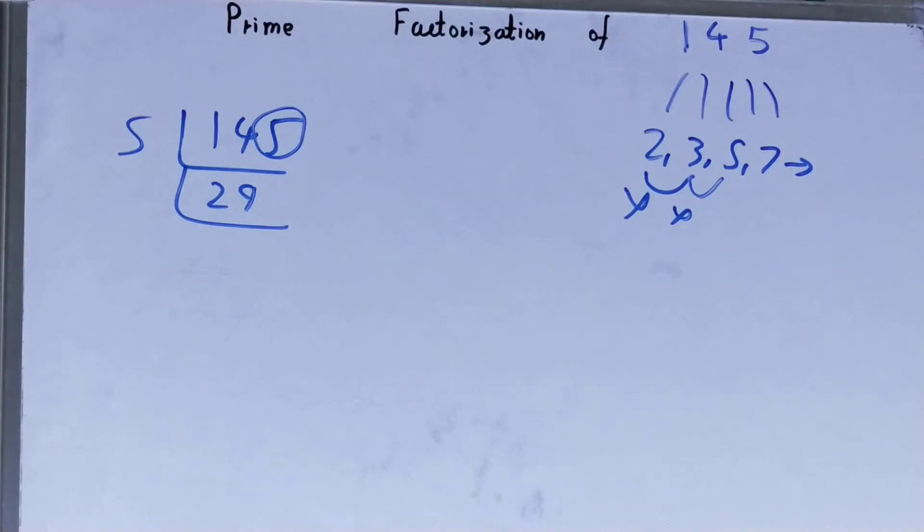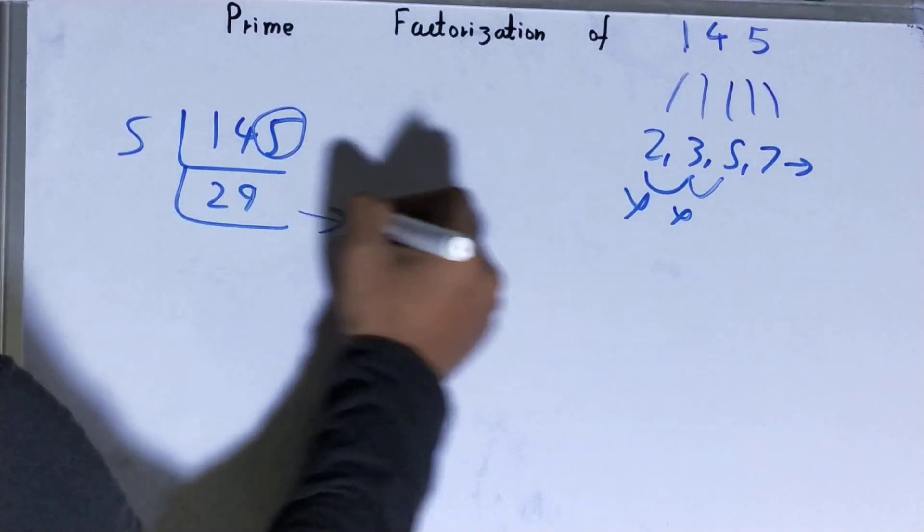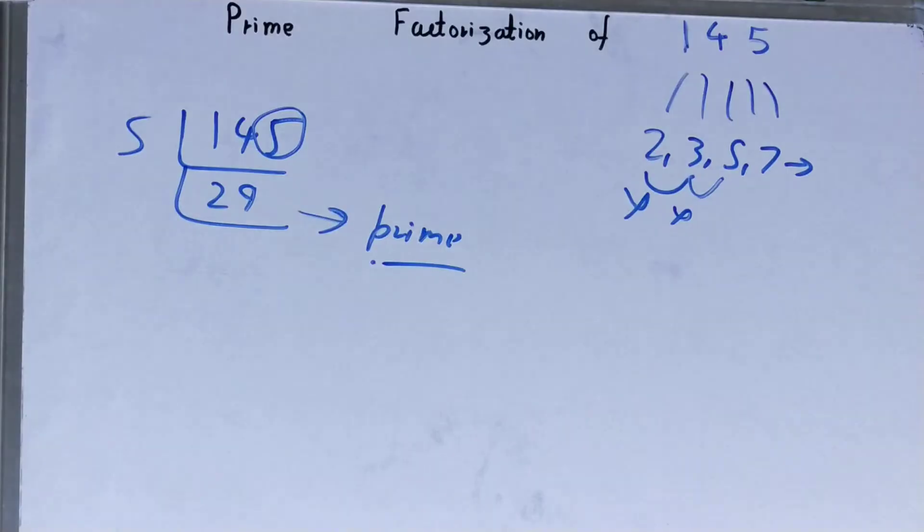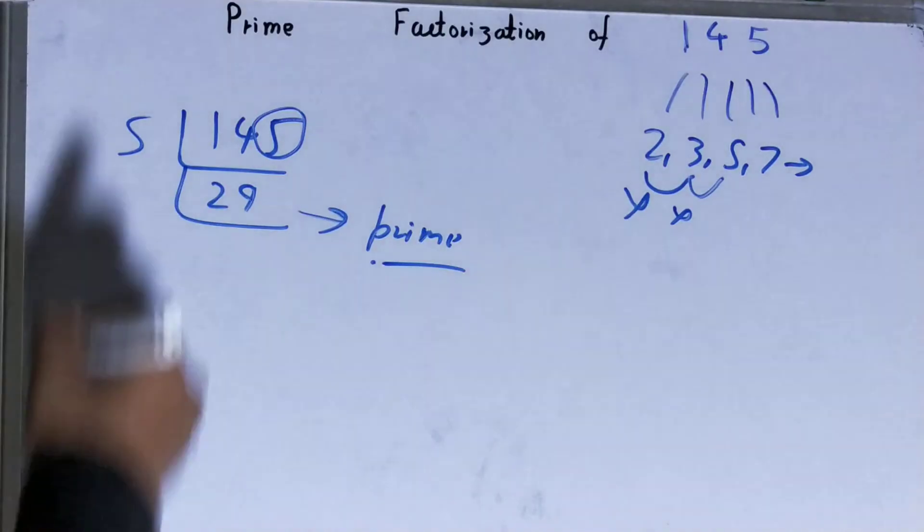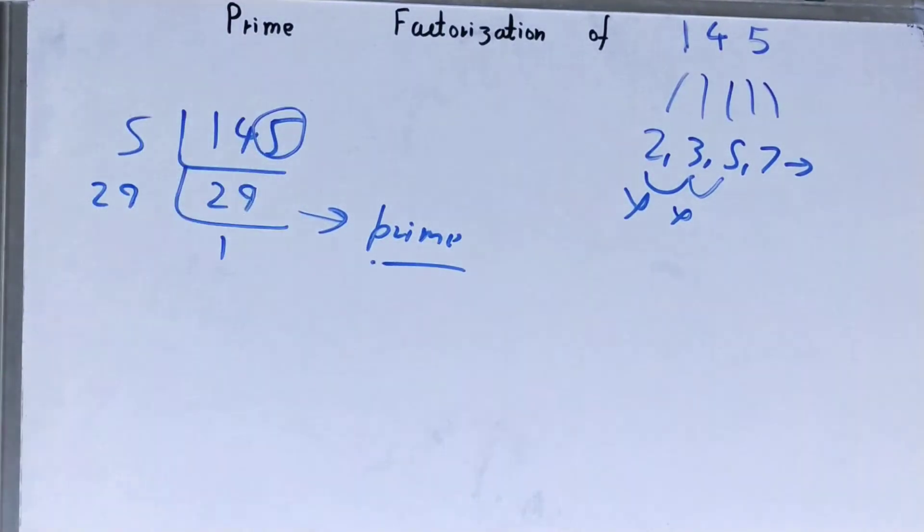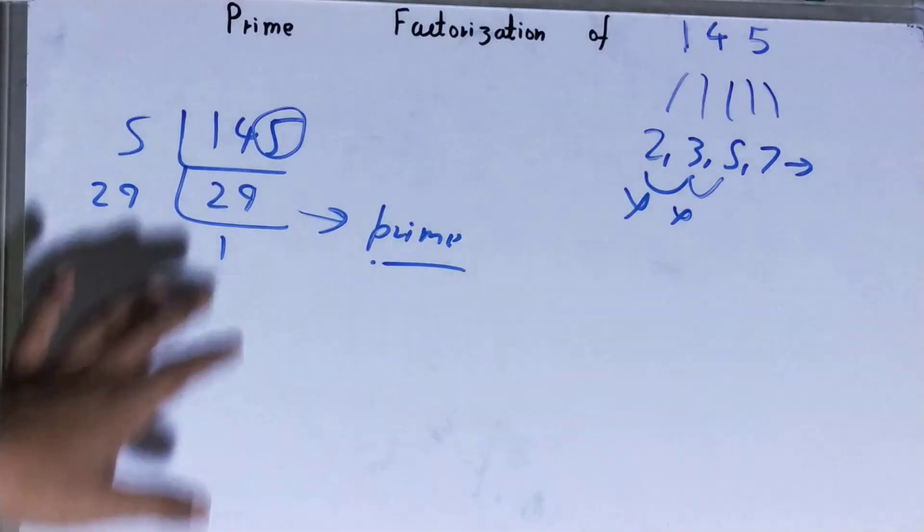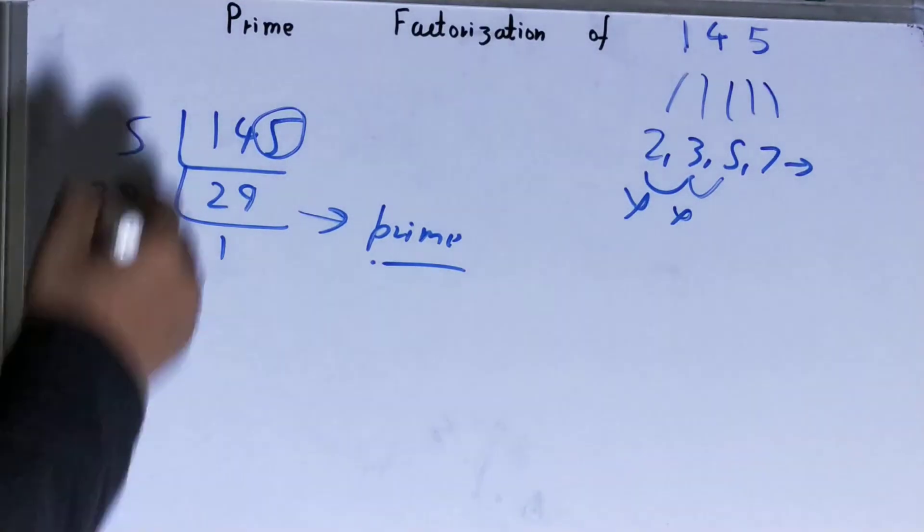If you try it with 7, 13, 17, 19, it will not divide because 29 is prime itself, right. So to divide this 29, you need 29 on the left-hand side. And when you keep 29 on the left-hand side, you'll get the value as 1. And once you get the value as 1, your work is done.